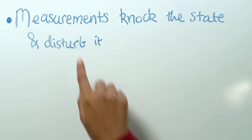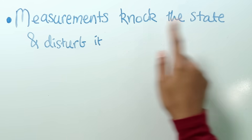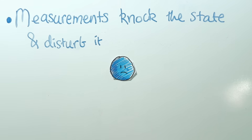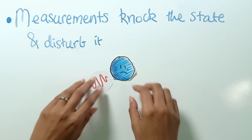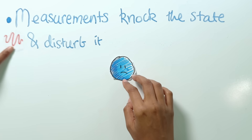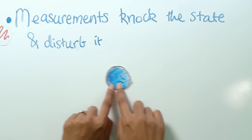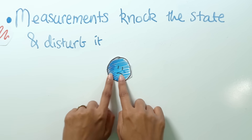You've probably heard the Heisenberg Uncertainty Principle described like this: measurements knock the state of a particle and disturb it, and that's why you can't know the position and the momentum at the same time. So for example, if I wanted to know where this electron was, I'd have to bombard it with high energy gamma rays, which would give me an accurate representation of its position but knock its state so badly that I'd have no idea what speed it's going at. But this is completely and utterly wrong.